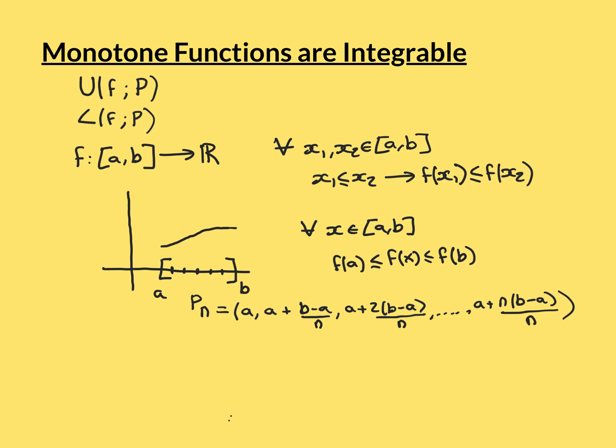The partitions we're going to work with are the really simple partitions where we break this interval [a, b] up into N equal pieces, where N is some natural number — 1, 2, 3, 4, 5, 6, 7, 8, etc., the counting numbers. So this is what partition P_N is going to look like.